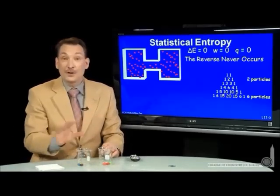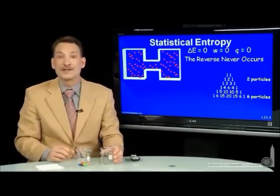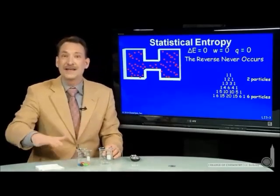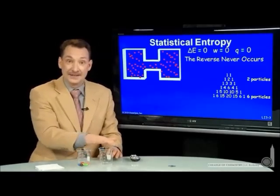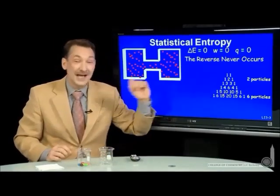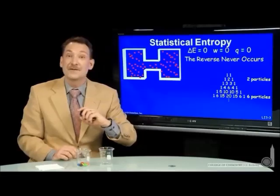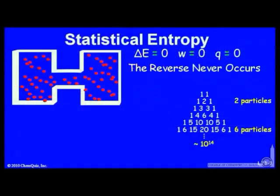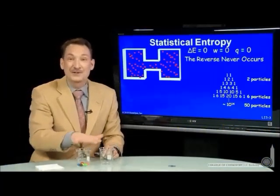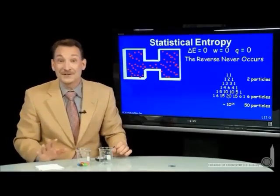All those arrangements are equally likely, and there are 20 of them versus the one way to have them all on one side. So if all states are available to you, the most likely case — 20 times more likely — is equally distributed. As you go to more particles, that becomes even more pronounced. With just 50 particles, it's already hundreds of trillions of ways to arrange them equally on each side — 100 trillion times more likely to see them equally distributed.